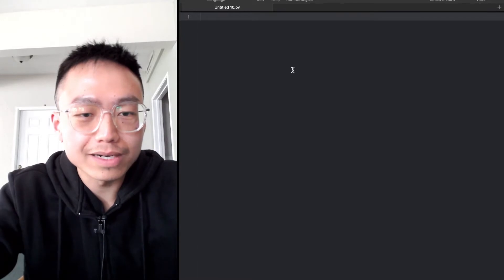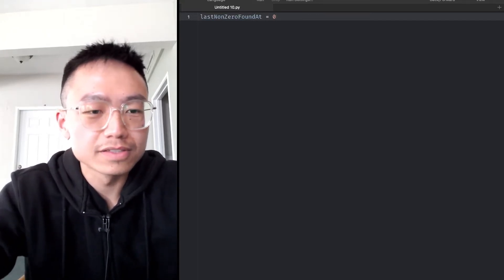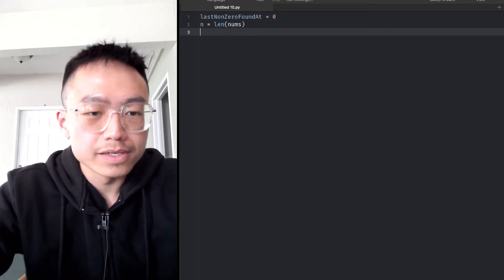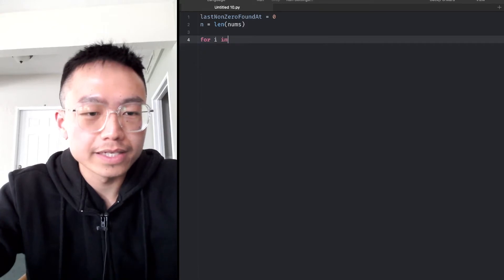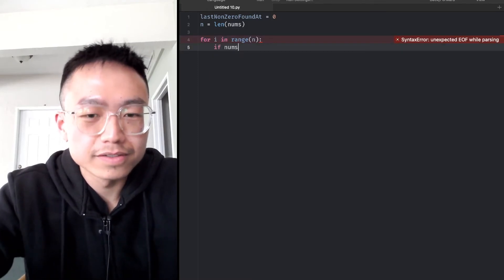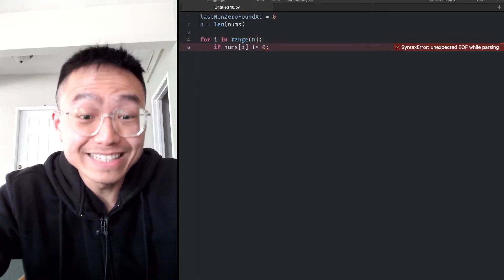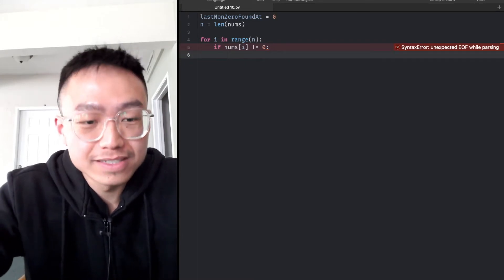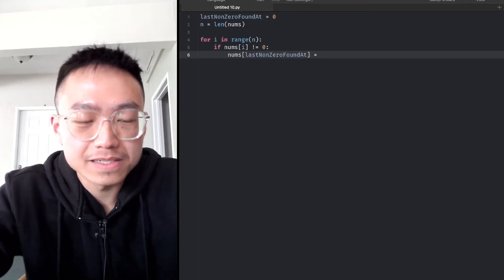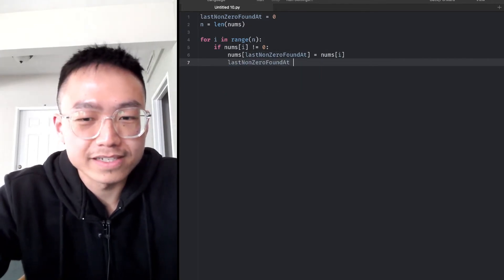First, we create a variable lastNonZeroFoundAt initialized to zero, and n is the length of the nums array. Then we set a for loop for i in range n. If the current element is not zero, then we append it in front of the last non-zero element we found. Then lastNonZeroFoundAt is incremented by one.